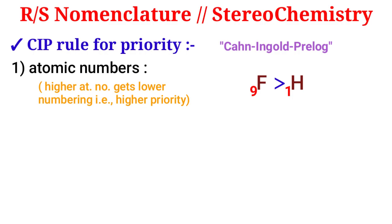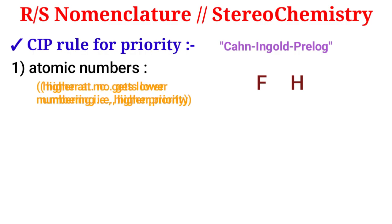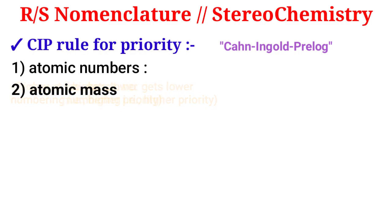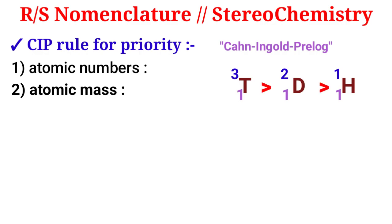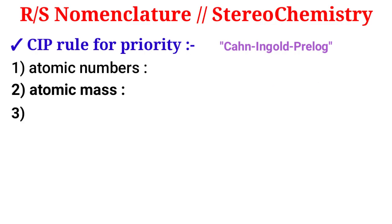Rule number two is atomic mass. If the atomic number is the same, then we consider atomic mass. For example, hydrogen and its isotopes have the same atomic number of one, but different atomic masses of one, two, and three. Higher atomic mass gets higher priority, so the group priority order follows accordingly.